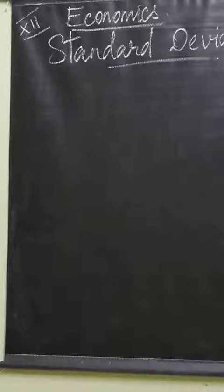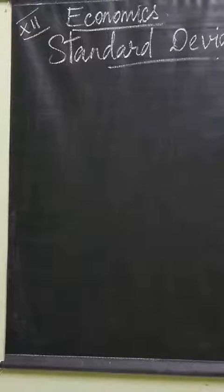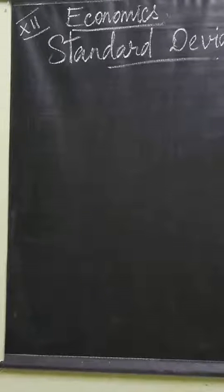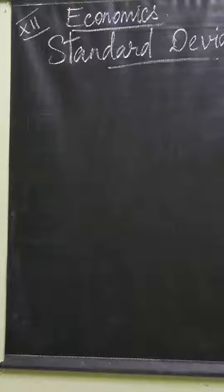The measure of central tendency — that is, average — serves to locate the center of the distribution. How to calculate the average? We have two methods: sigma x by n, or A plus sigma x by n. Both methods help us to get the center of the distribution.